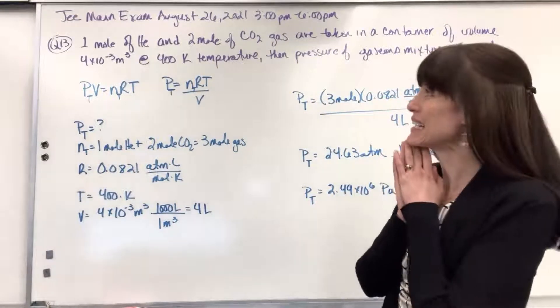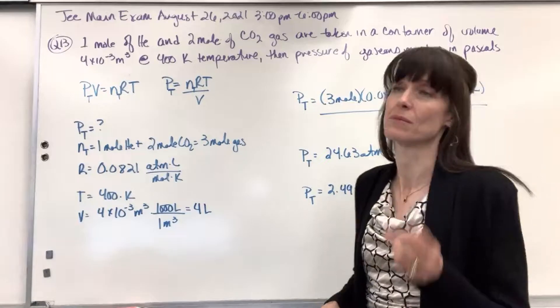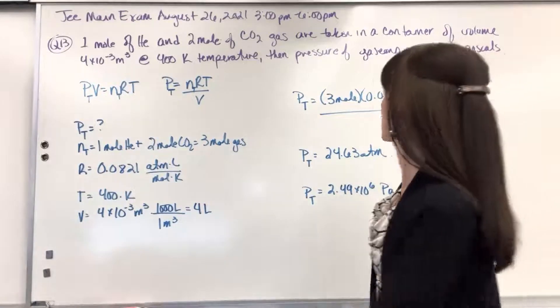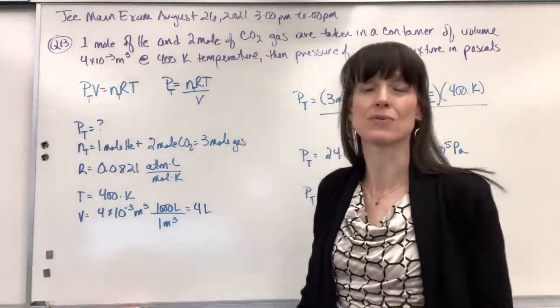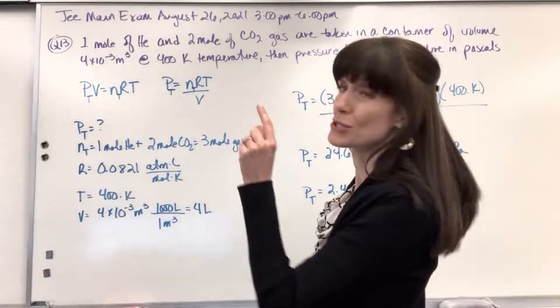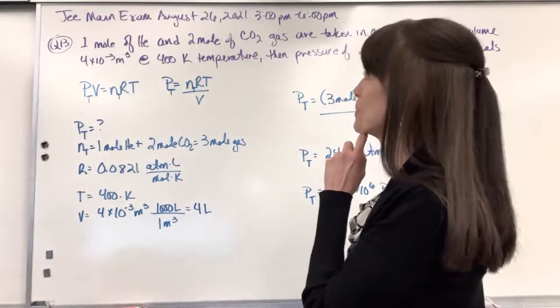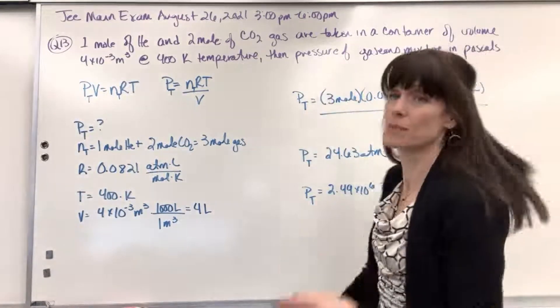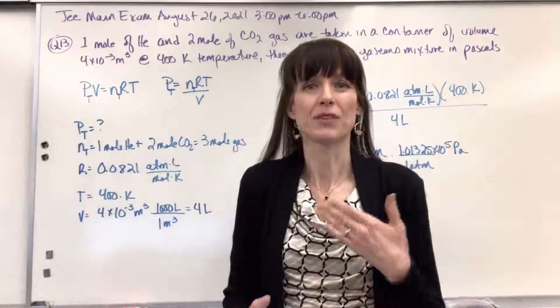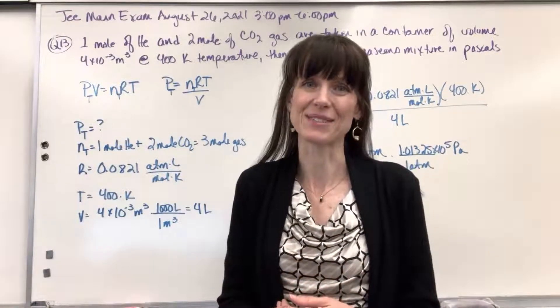It's question 13, and it reads that we have one mole of helium and two moles of carbon dioxide gas. They're taken in a container of a volume of 4 times 10 to the minus 3 cubic meters. At 400 Kelvin temperature, it wants to know what's the pressure, but they're specific that they want the pressure to be in pascals.